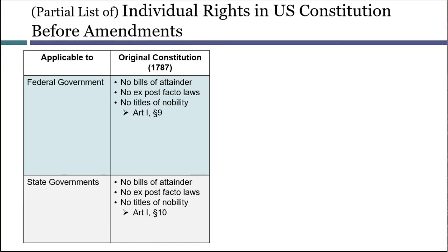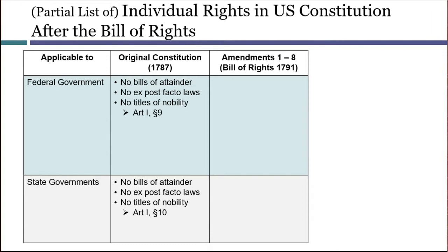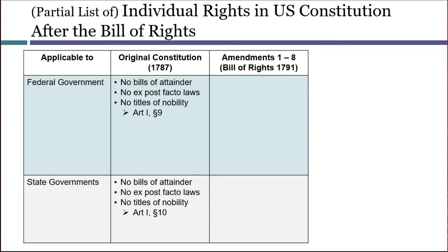During the ratification debates, there were many concerns that this new federal government was not expressly required to respect many of the individual rights that had been protected by most state constitutions — things like freedom of speech, freedom of religion, or freedom from unreasonable search and seizure. To deal with this criticism, the very first Congress proposed a set of constitutional amendments known as the Bill of Rights, which included a number of individual rights that we take for granted today, like freedom of speech and freedom of religion.